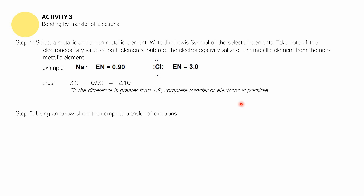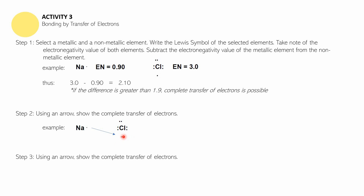Using arrows, you have to show the complete transfer of electrons. Sodium's Lewis symbol is here and chlorine's Lewis symbol is here. Write an arrow where the tail points toward the electron from sodium and the arrowhead points toward chlorine, showing the direction of transfer. Sodium will become positive because it lost negativity, and chlorine will become negative because it gained negativity.